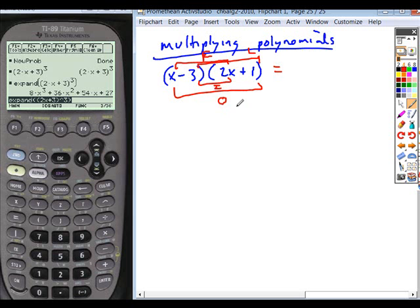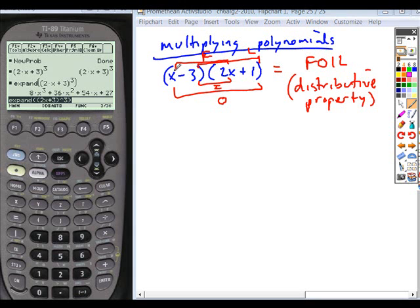Foiling is just the distributive property. So again, in any math class where they do not allow you to use calculators, all you do here is distribute.